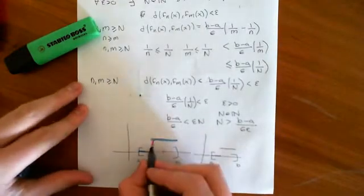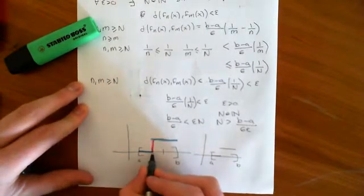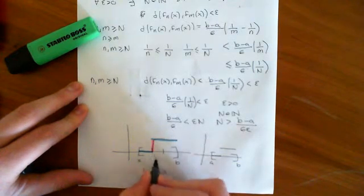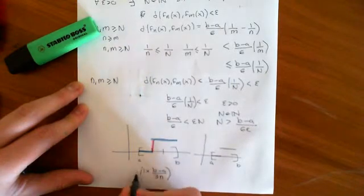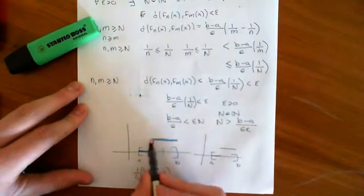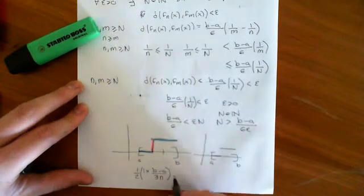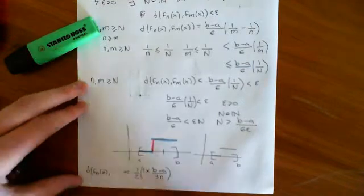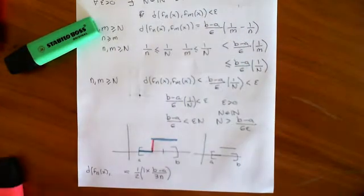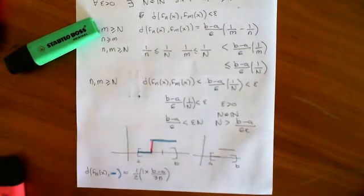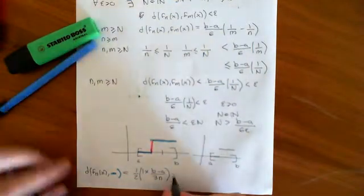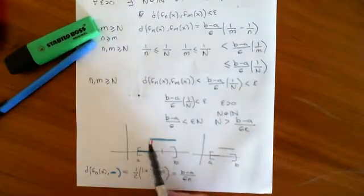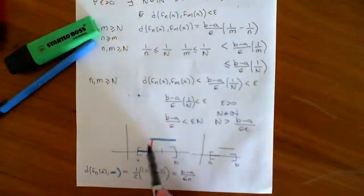The area between the jump function (blue) and f_n (black) is just the area of that tiny triangle: height 1, times base (b−a)/3 — the length of the middle third interval — times 1/n (the proportion of that interval occupied), times 1/2. That gives (b−a)/(6n), which is the distance in our metric space between f_n(x) and the blue jump function. And (b−a)/(6n) converges to 0 as n → ∞, so the sequence converges to that jump function.